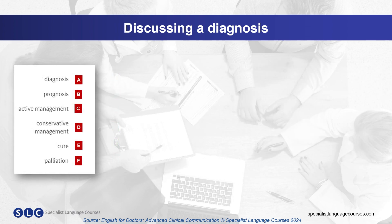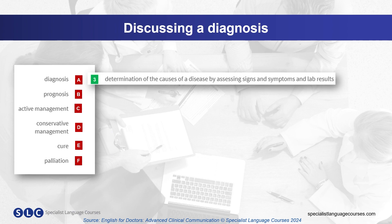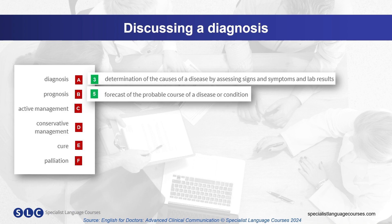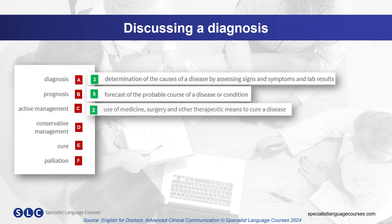And here are the answers. Diagnosis: determination of the causes of a disease by assessing signs and symptoms. Prognosis is the forecast of the probable course of a disease or condition. Active management is the use of medicine, surgery, and other means to cure a disease.